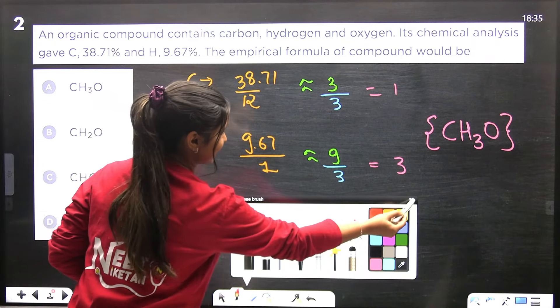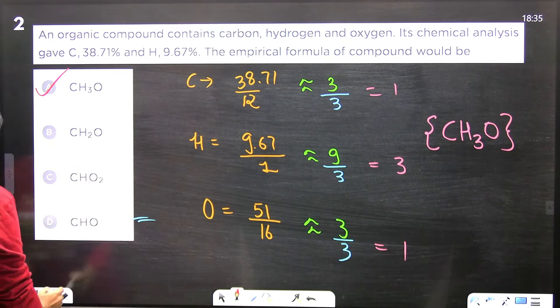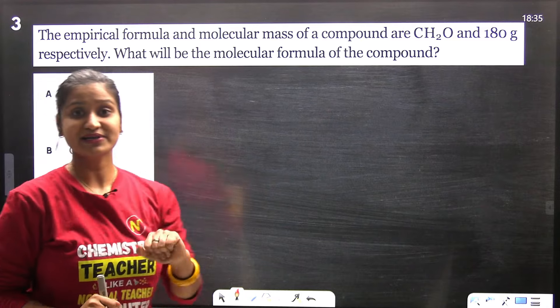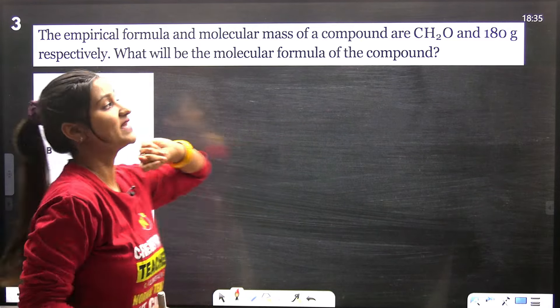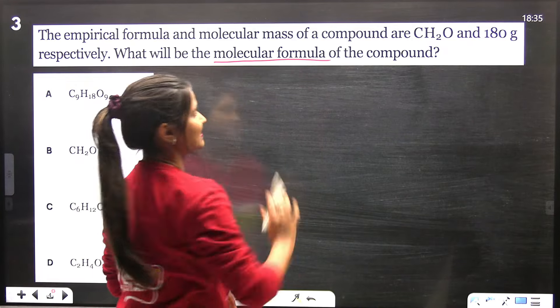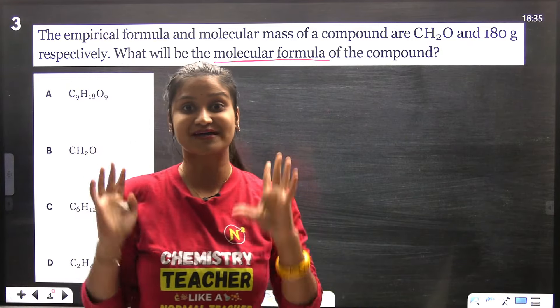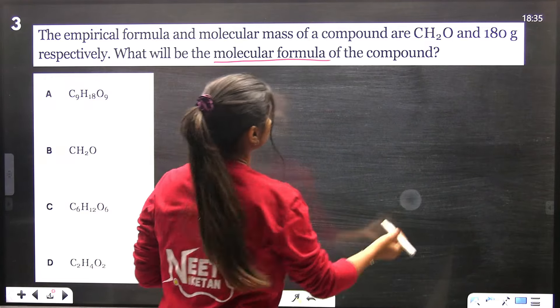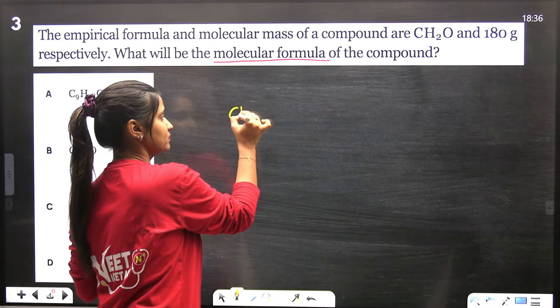Let's move ahead. Empirical formula is given and molecular mass is given. So we have to tell the molecular formula. First of all, we need to know the value of N factor. If we know the empirical formula CH2O, then we can find the empirical formula mass.